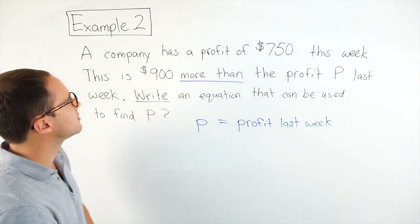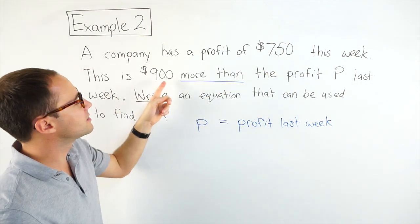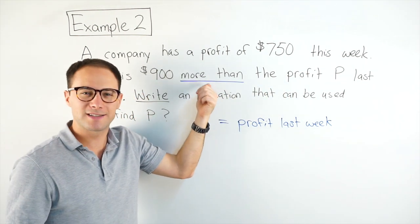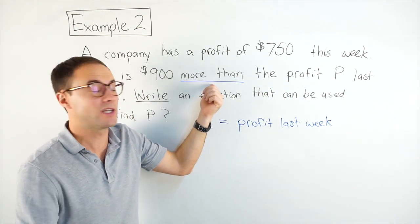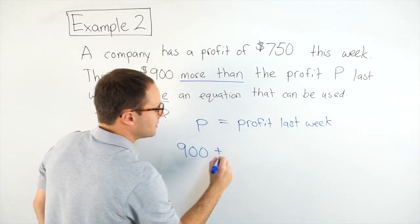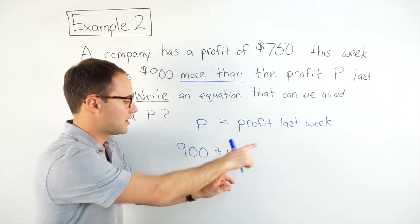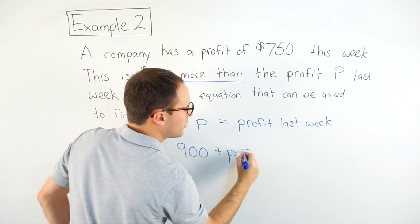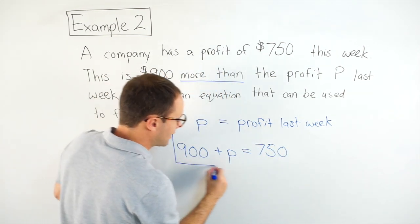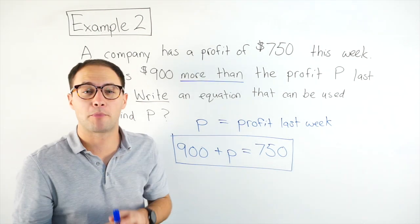We know it's going to be an equation. So we're going to have an equal sign. Let's start to fill in the pieces. So the company has a profit of $750 this week. This is $900 more than the profit p from last week. Well, more than is a key word, and that means addition. So $900 plus p, right? More than means plus, addition, plus p. This is the profit last week, right? Plus $900 is going to be equal to the profit from last week, $750. So there is our equation. It didn't ask to solve it, so we're done there. Here's another problem to try on your own.